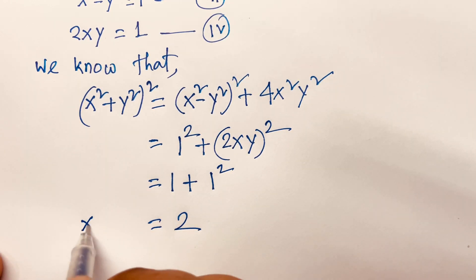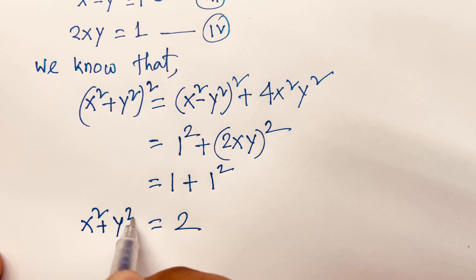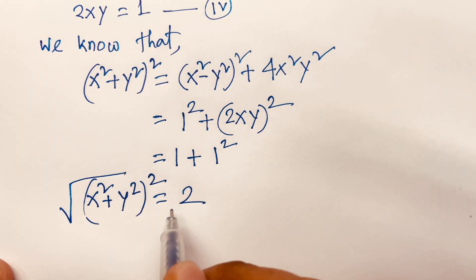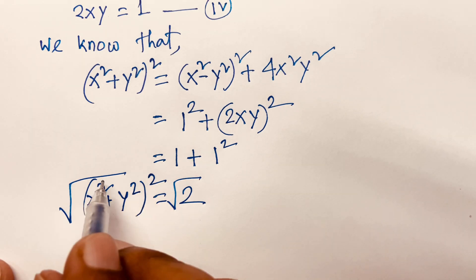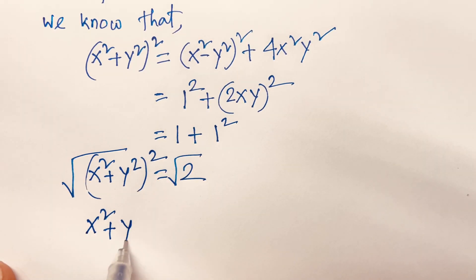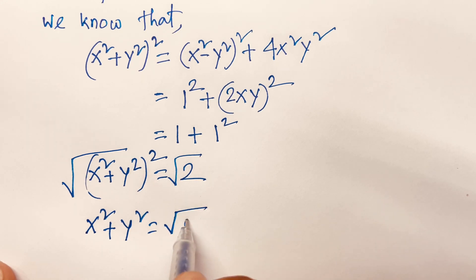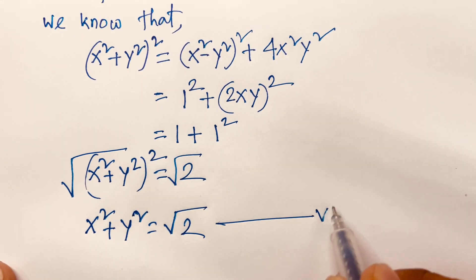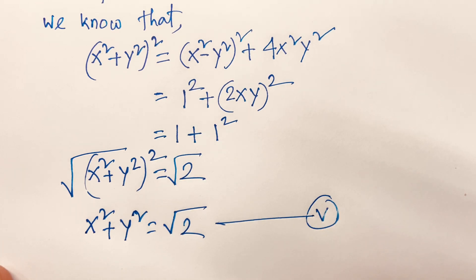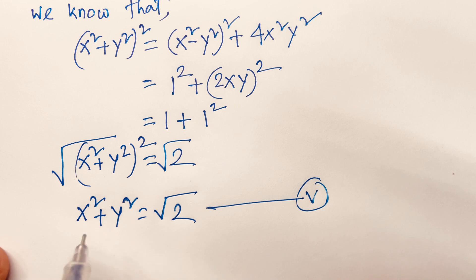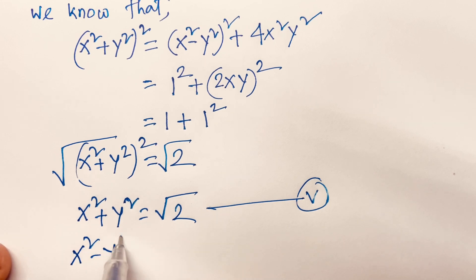So 1 plus 1 equals 2. We find that (x squared plus y squared) whole square equals 2. Taking square root on both sides, the square root is cancelled, so x squared plus y squared equals square root of 2. This is our fifth equation. Our third equation is x squared minus y squared equals 1.